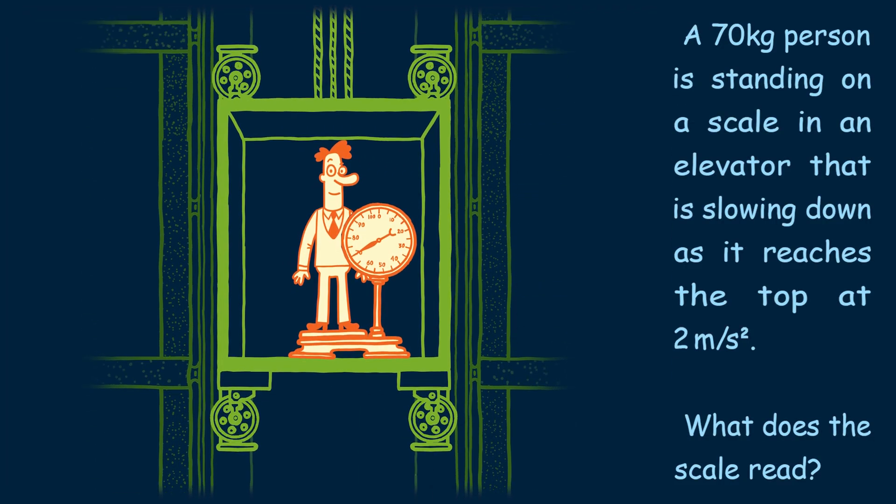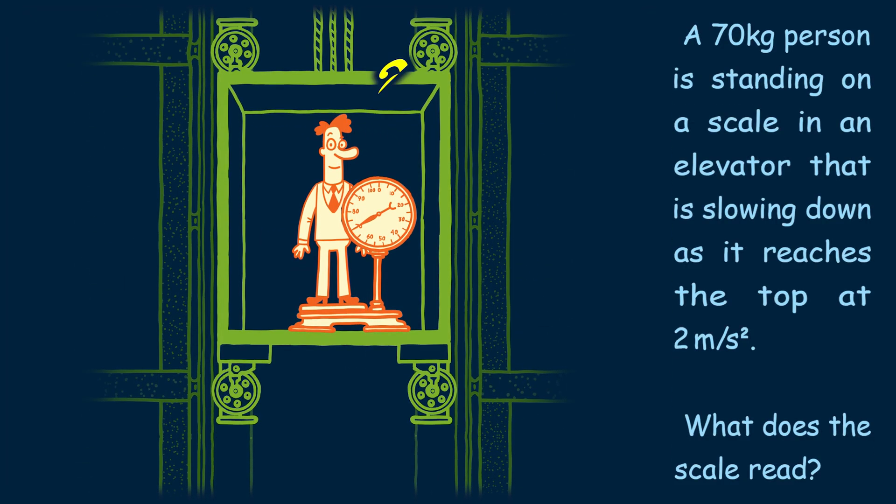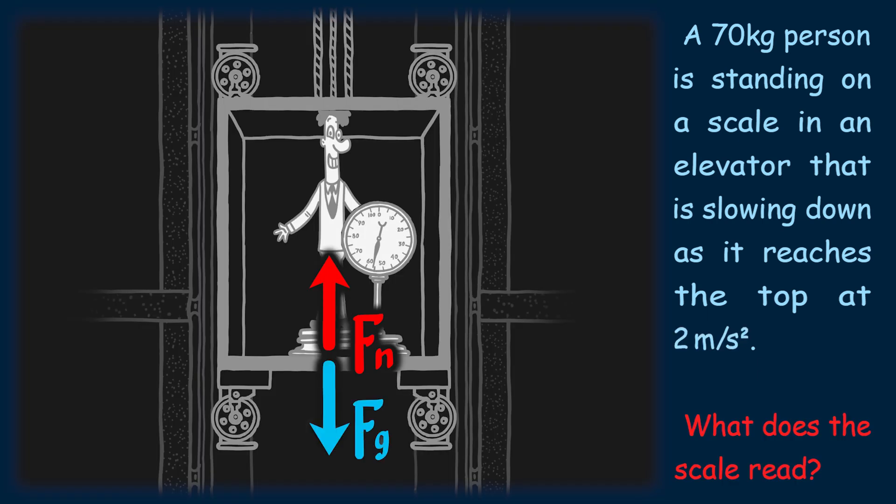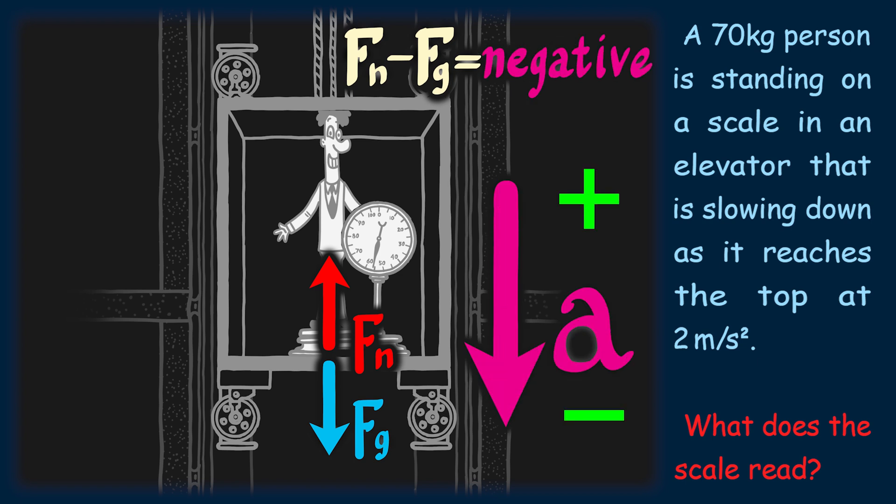Now let's say that the elevator starts slowing down as it reaches the top, such that it is decelerating at 2m per second squared. Again, we draw our force diagram with the same force of gravity. However, this time the acceleration is negative, because the velocity is decreasing.